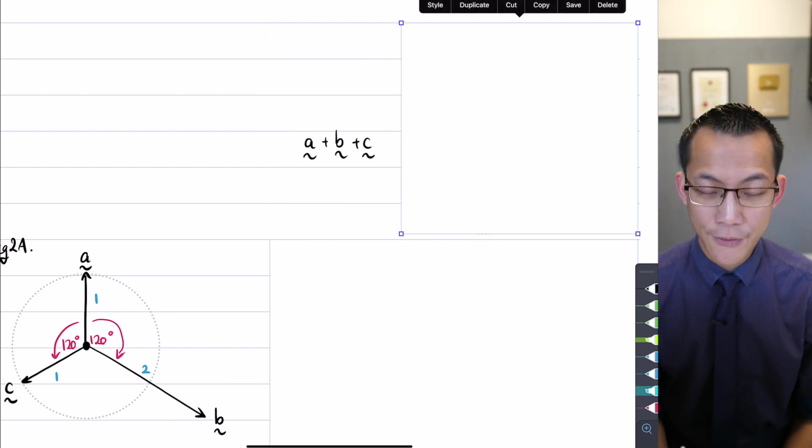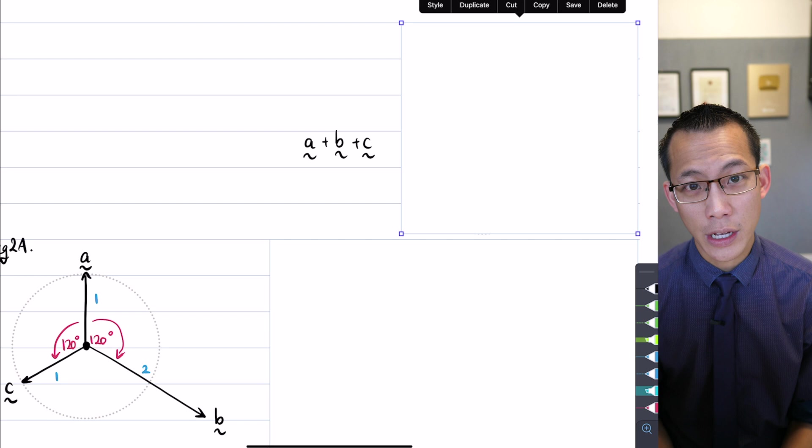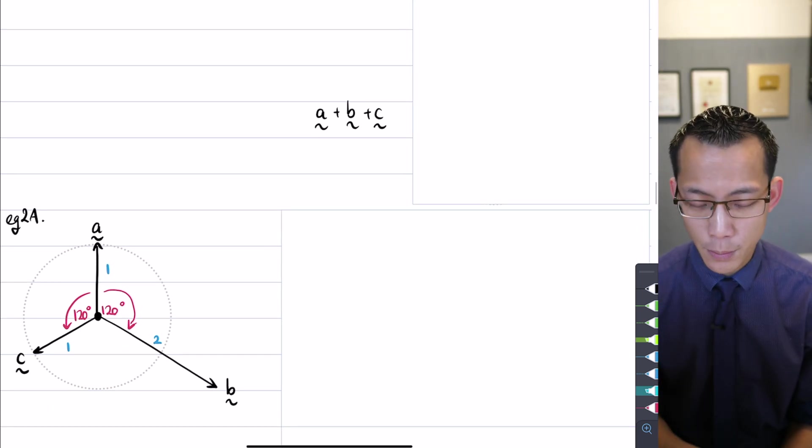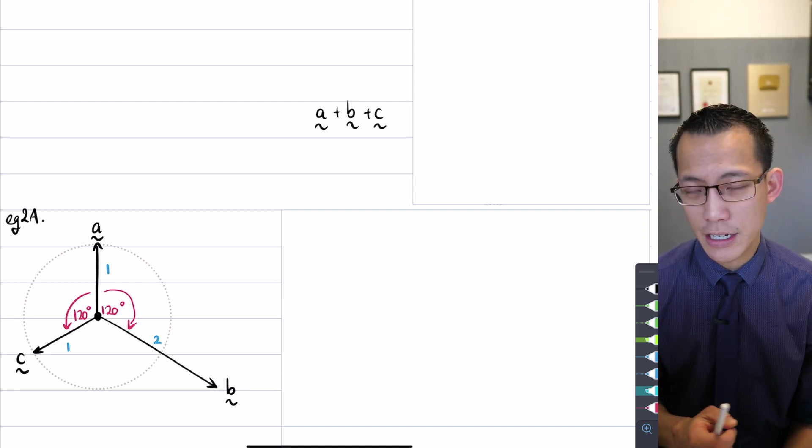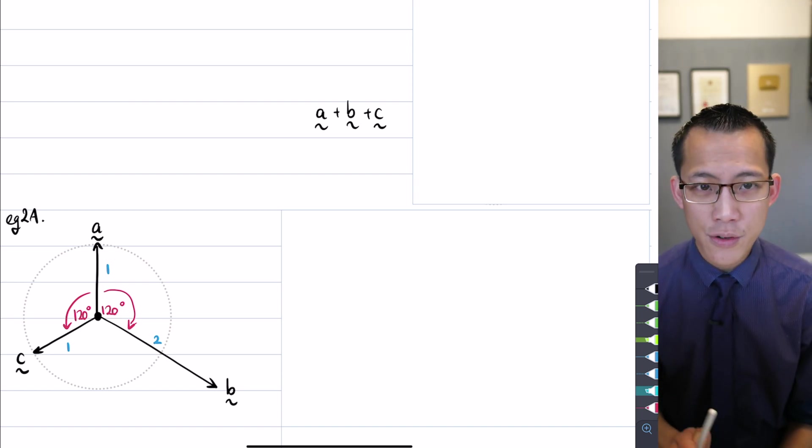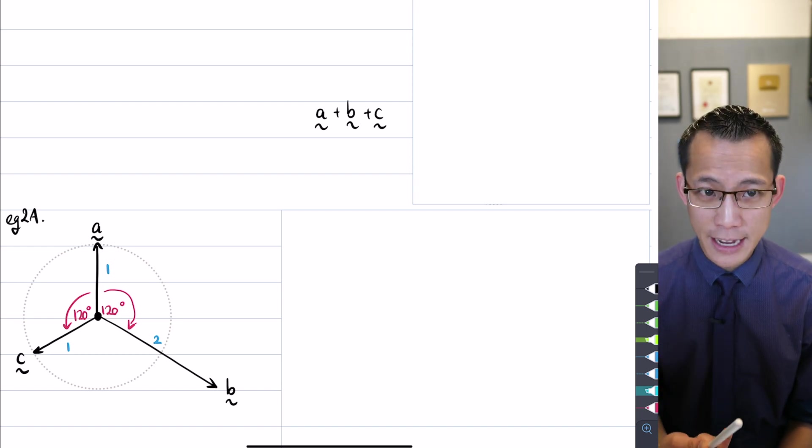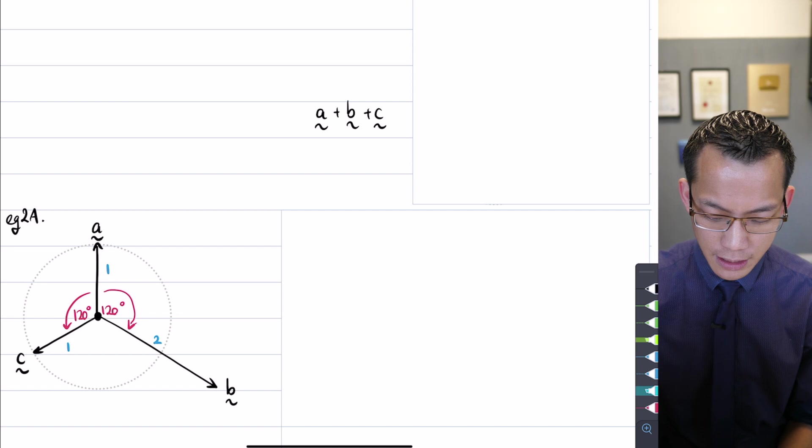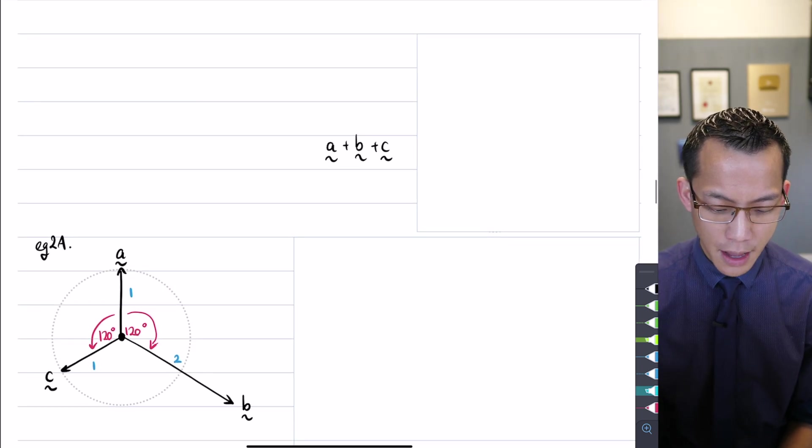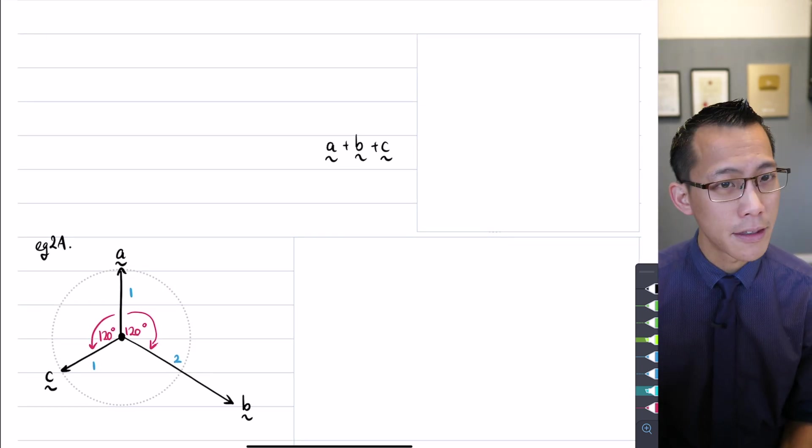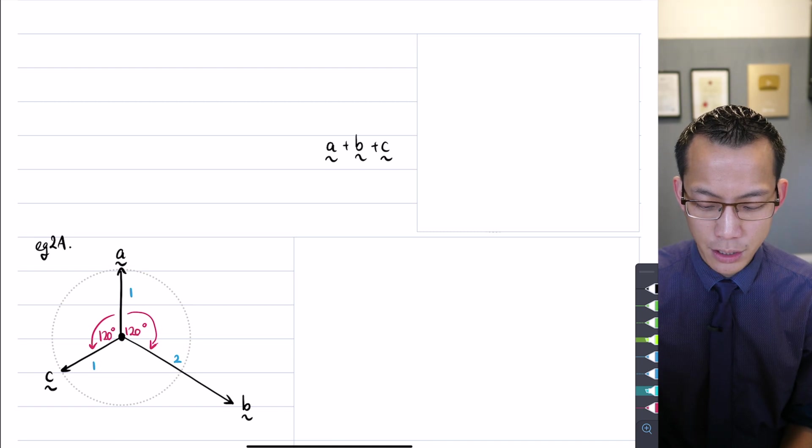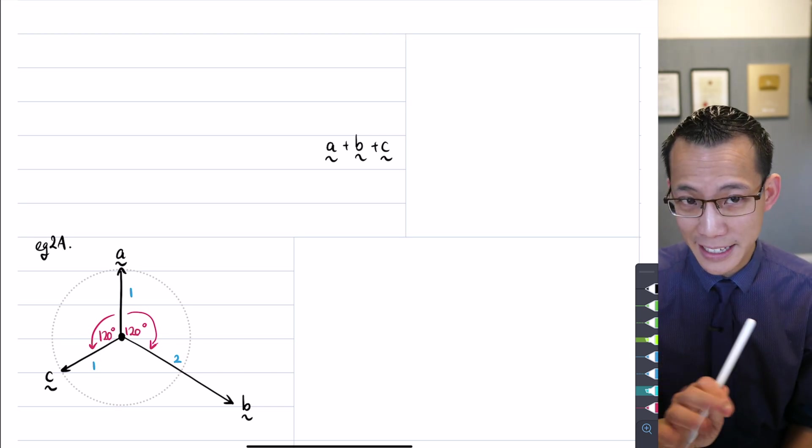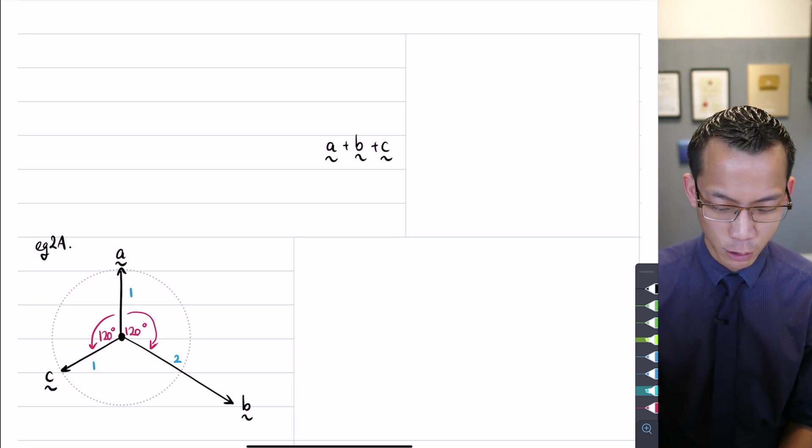I just want to show you what that looks like and how important it is for you to get the sense of thinking geometrically about this. So if I did vector a and then b and then c, just going clockwise around, what would that look like? I want you to take a moment to do a rough sketch of what that would look like, where you would end after you did a and then b and then c. Do it on your page, and I'll give you 10 seconds to do your own one there.